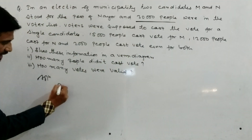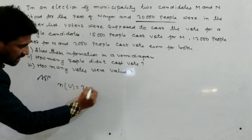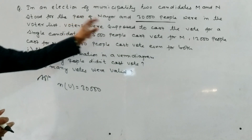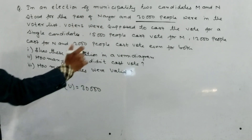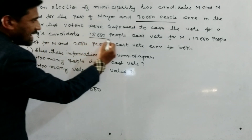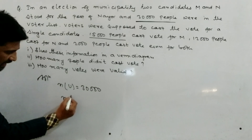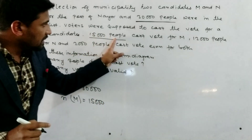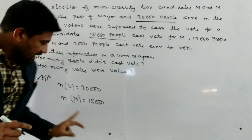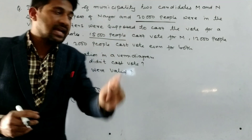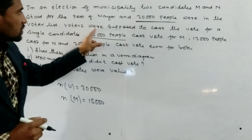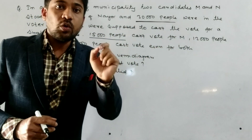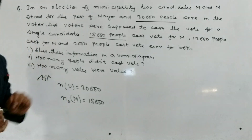In the solution, first write: let M and N be the two candidates who stood for the post of mayor. n(U) is the total number of persons, equal to 30,000. Now, 15,000 people cast vote for M — here is a common mistake: you should write n(only M) = 15,000, not n(M), because voters cast for a single candidate.